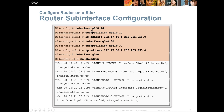An example would be 'interface G0/0.10' to create the dot10 sub-interface, then 'encapsulation dot1Q 10' to specify the VLAN, followed by assigning an IP address and 'no shutdown'. At the very end, make sure to turn on the parent interface G0/0 with a 'no shutdown'. That's it — sub-interfaces configured and inter-VLAN connections are good to go.